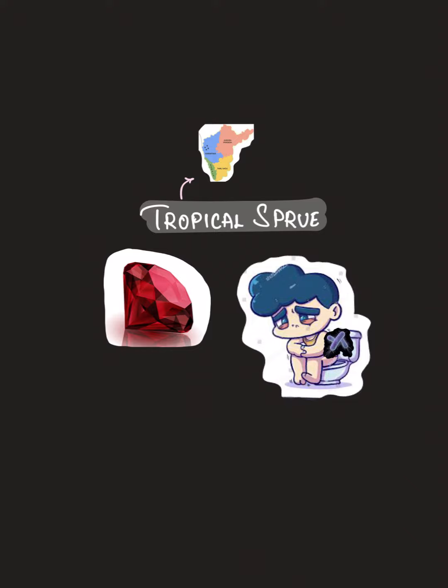Whenever a tropical sprue question comes, remember there's GEM. GEM: G for glossitis — that is inflammation of the tongue. E for emaciation — the person will be very much emaciated. And M is for macrocytic anemia, which will be present.